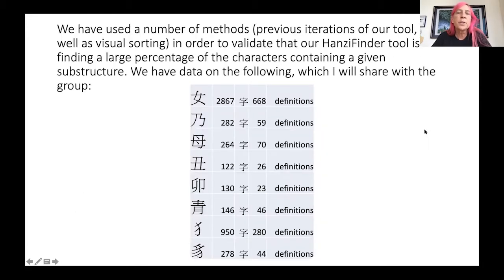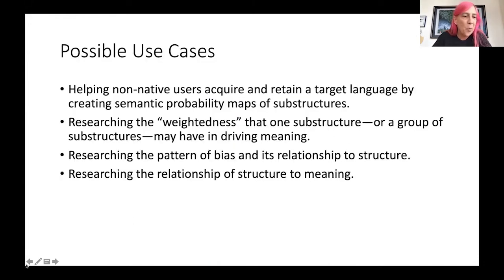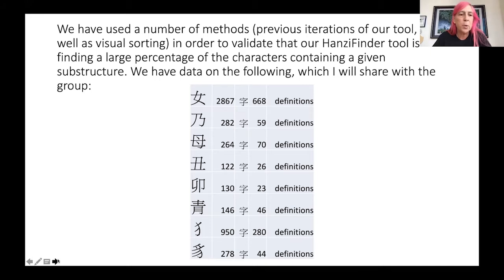The renderings of these nearly 90,000 characters can be searched by a structural query that is as small as one stroke or as large as an entire character or anything between as defined by one node to node section as seen below. We have used a number of methods in order to validate that our tool is finding a large percentage of the characters containing a given substructure. We have data on the following, which I will share as soon as I'm done with this talk in the chat.